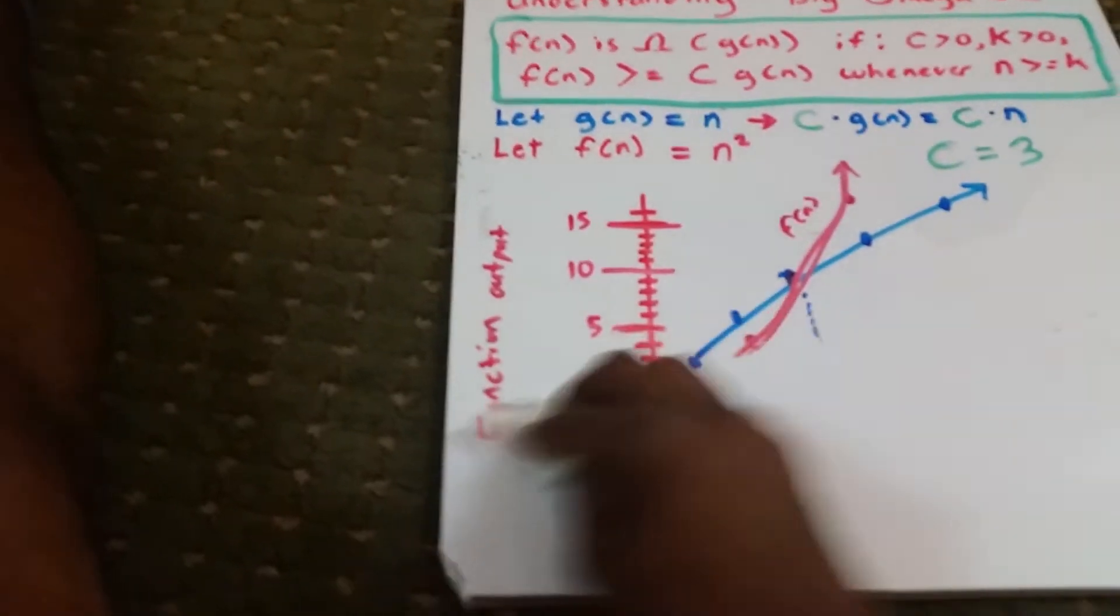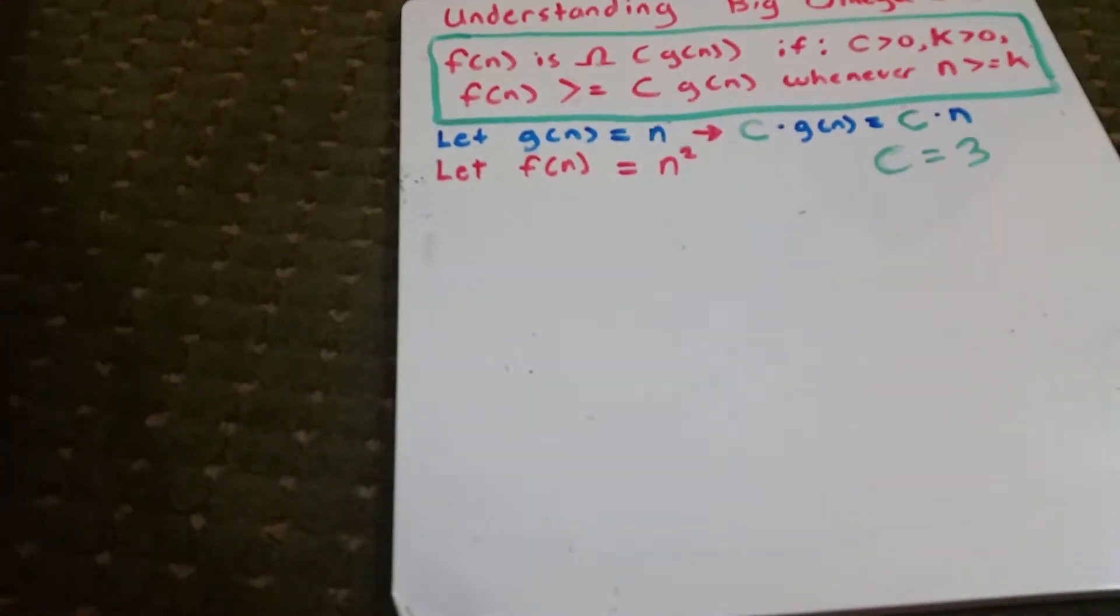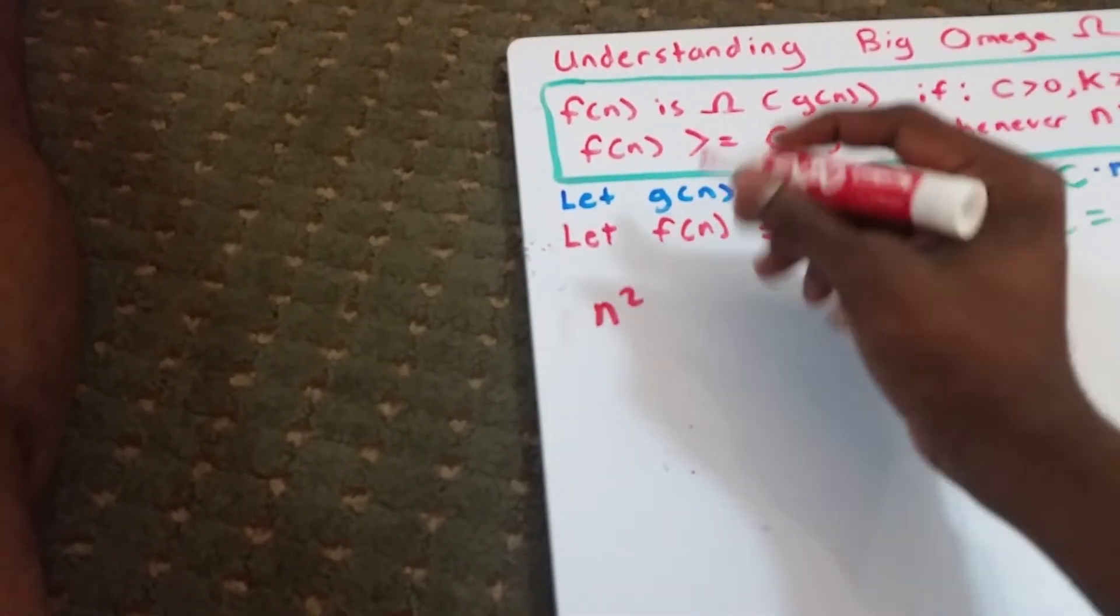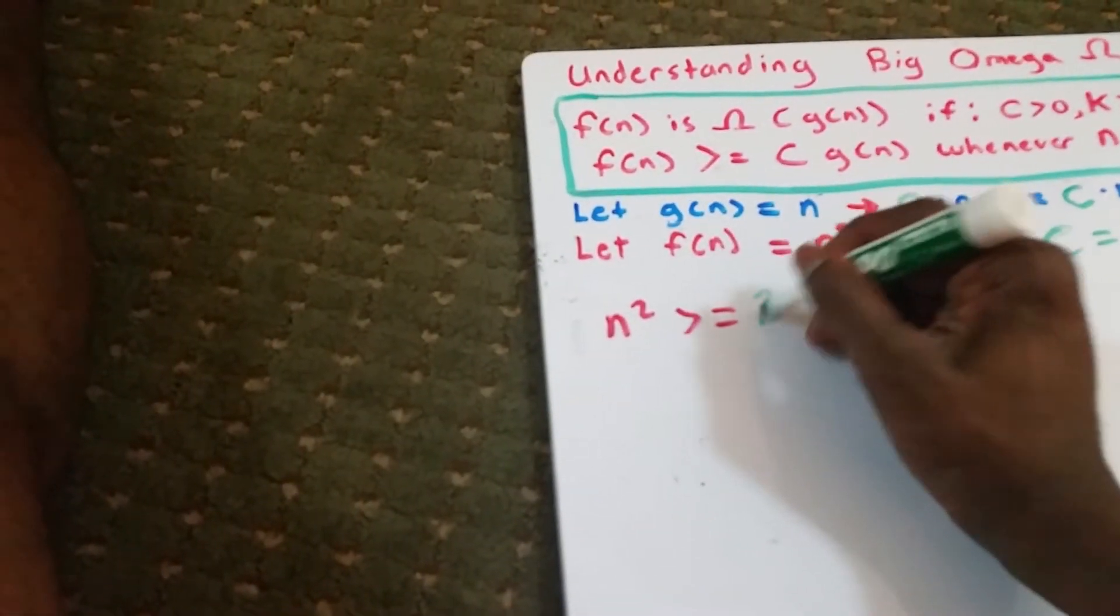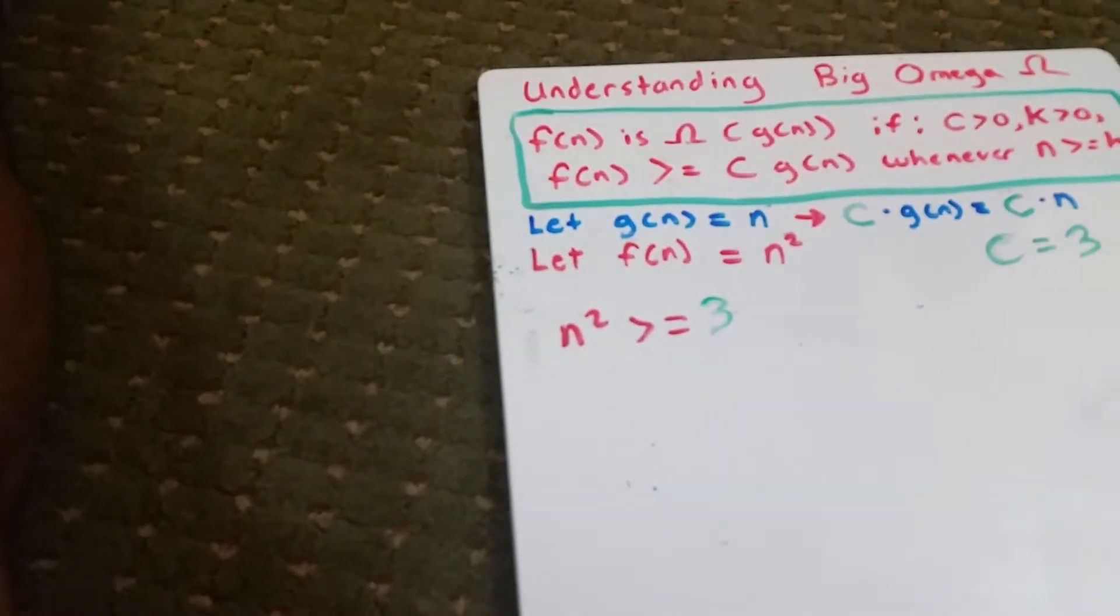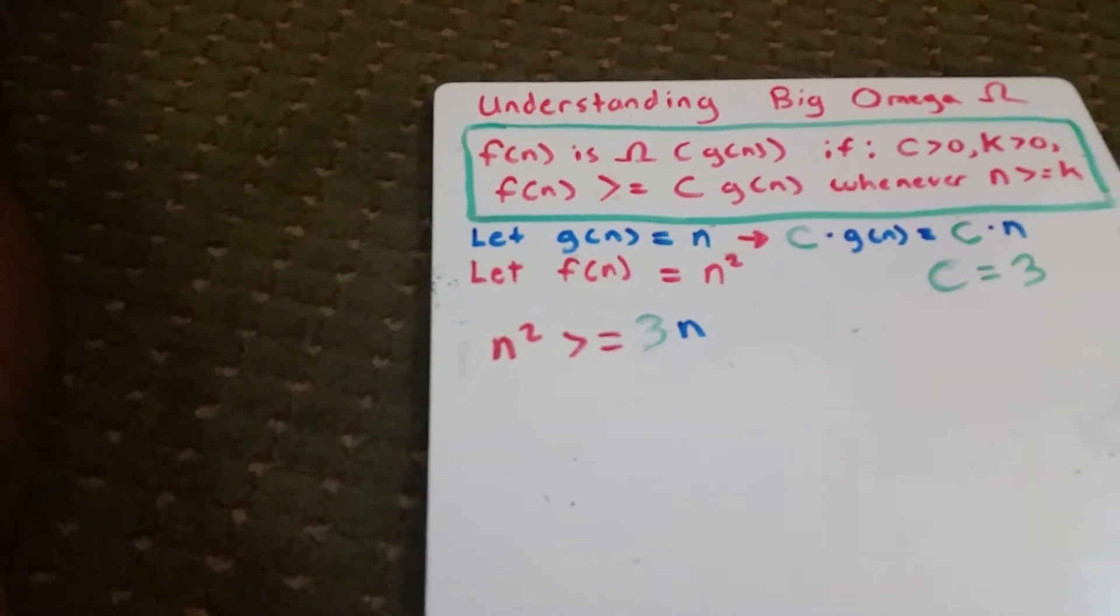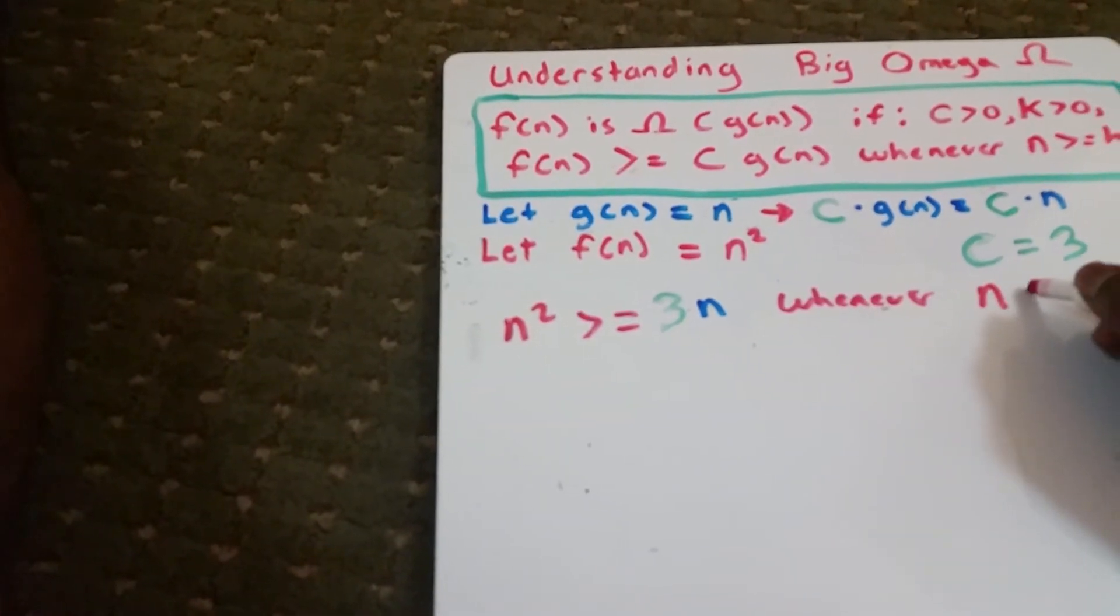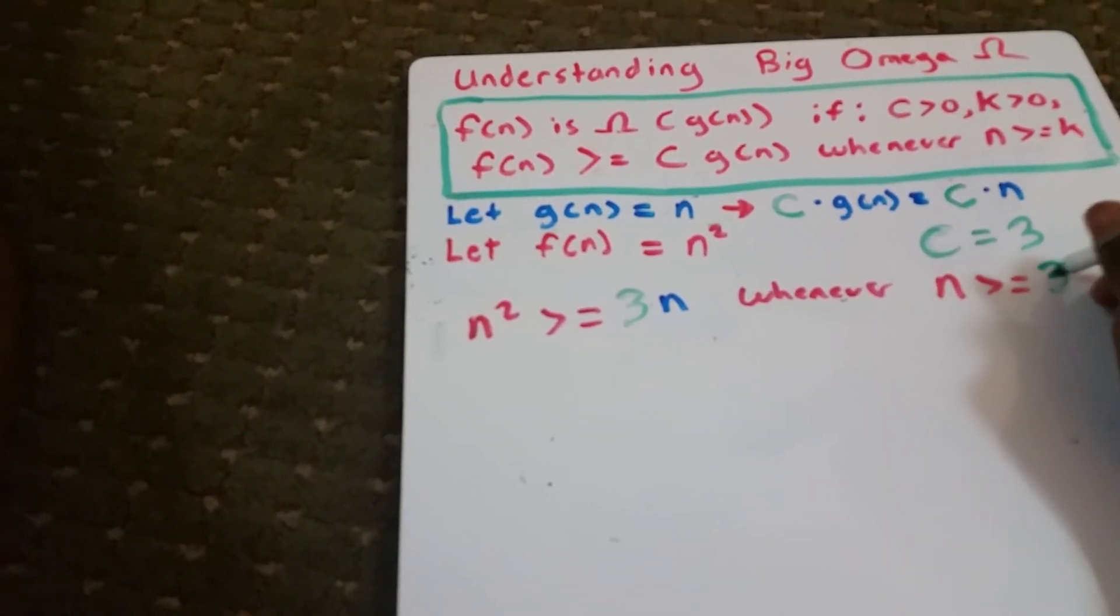And so now what we can do is we can write this equation again in terms of g of n equaling n, f of n equaling n squared, our c equaling 3, and our k equaling 3 as well. And we can see if that equation is true.